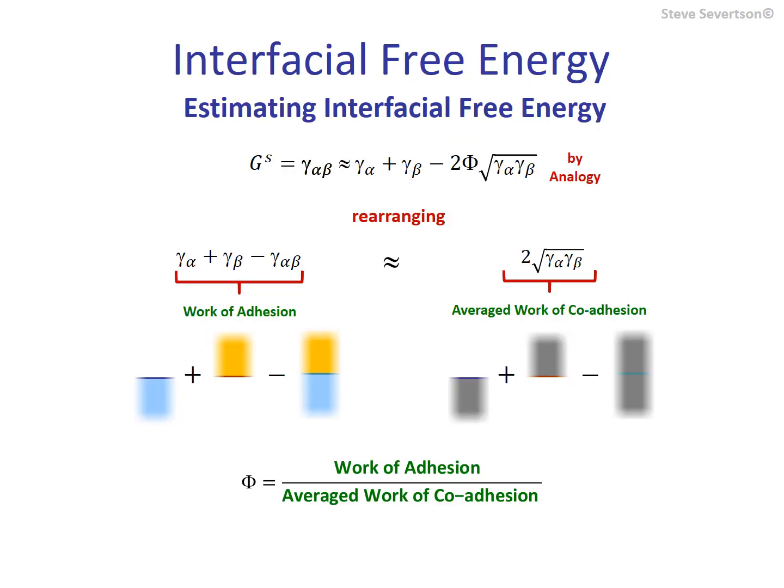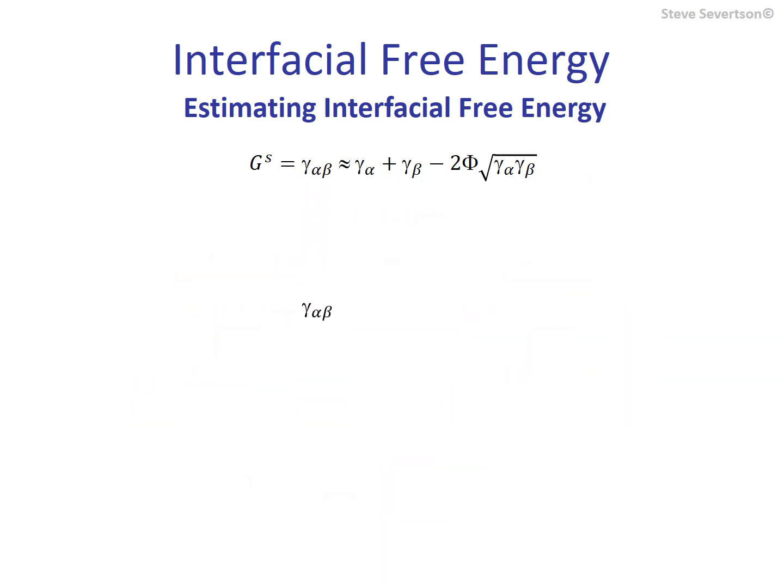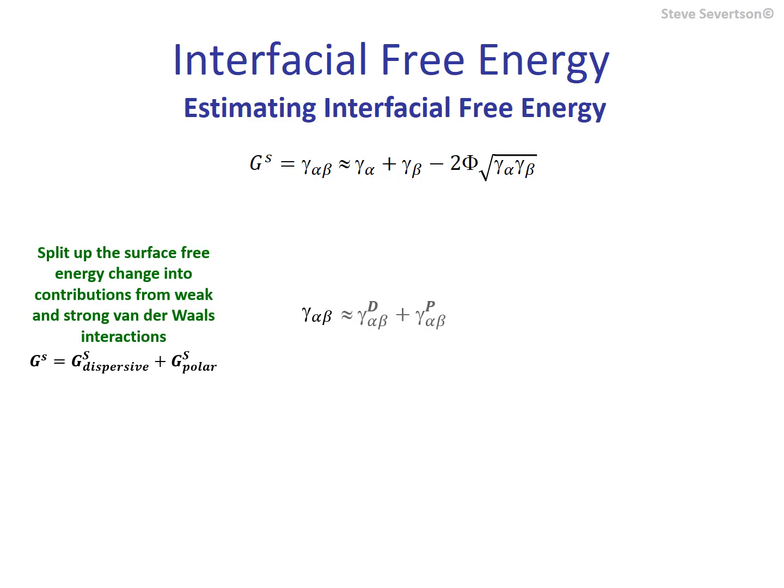Let's next look at what are considered more sophisticated methods known as multi-component approaches. We begin by dividing the interfacial energy into a pair of independent components: contributions from weak, non-hydrogen bond van der Waals interactions, which we call dispersive and identify with a capital D, and strong hydrogen bond van der Waals contributions, which are said to be polar, identified with a capital P.